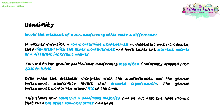Unanimity. Would the presence of a non-conforming other make a difference? In another variation, a non-conforming confederate — a dissenter — was introduced. They disagreed with the other confederates and gave either the correct answer or a different incorrect answer. This led to the genuine participant conforming less often. Conformity dropped from 32% to 5.5%. Even when the dissenter disagreed with both the confederates and the genuine participant, conformity levels still dropped significantly — the genuine participants conformed around 9% of the time. This shows how powerful a unanimous majority can be, and also the huge impact that even one other non-conformer can have.